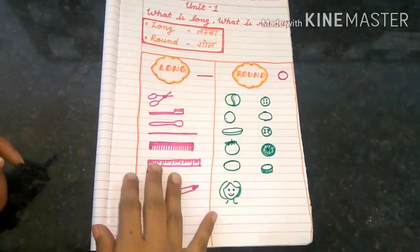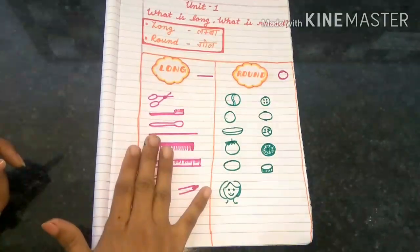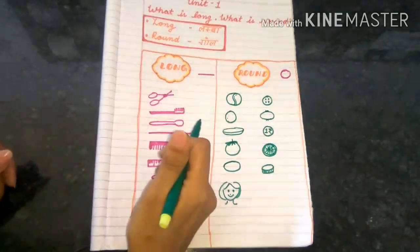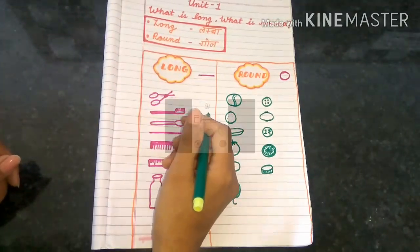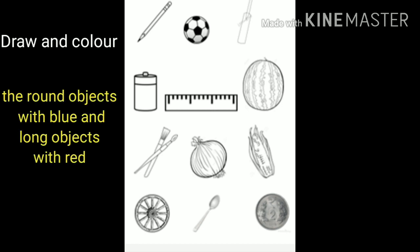So we have sorted out the objects on the basis of round and long. You can categorize objects yourself. Hope you have understood this topic. If so, you can do the given activity that you can see on your screen right now. You have to draw and color the round objects with blue and long objects with red.